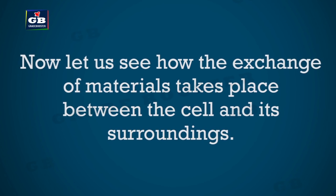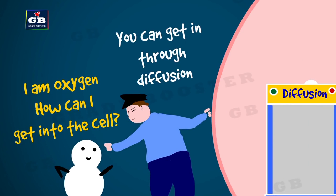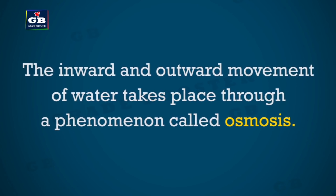The exchange of gases between the cell and its surroundings happens by diffusion. The movement of gas molecules from an area of high concentration to an area of low concentration is called diffusion. For example, the concentration of oxygen outside the cell is high compared to inside the cell, so oxygen molecules enter the cell through the plasma membrane by diffusion.